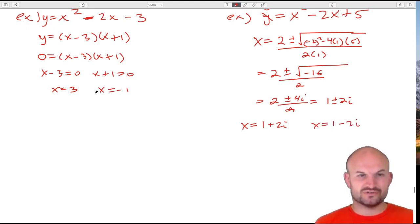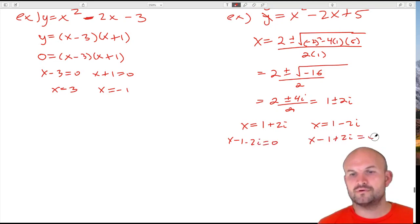If I have my zeros and I want to write them as factors, I'm just going to set them equal to zero. This is something we're actually going to work on tomorrow in my class. Now those are the factors and if I have the factors, I can just write my polynomial in factored form.